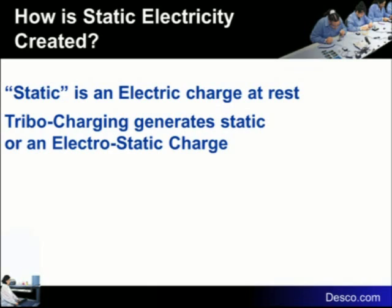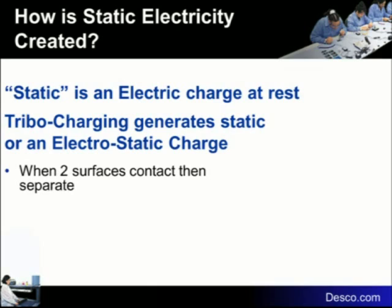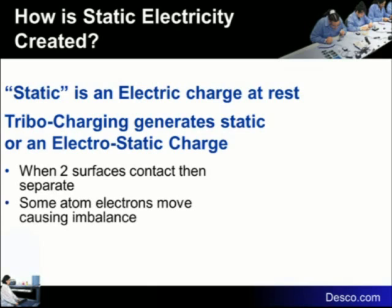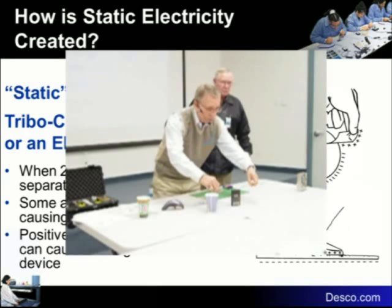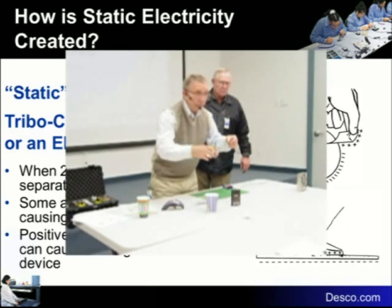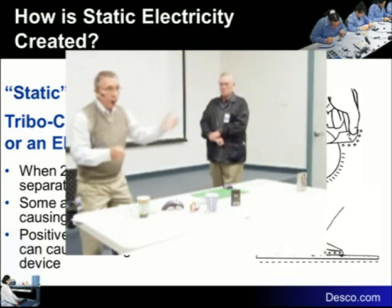Static is an electric charge at rest. When two surfaces are in contact and then separate, you will always develop a static charge — that can be a person walking on a floor, sliding out of a car seat, unrolling tape, or picking up plastic. Some atoms stick with one material and some stay with the other, and the charge is always opposite. For example, pulling out tape gives a positive charge on the tape while the body of the tape roll is negative — one surface becomes positive, one becomes negative.